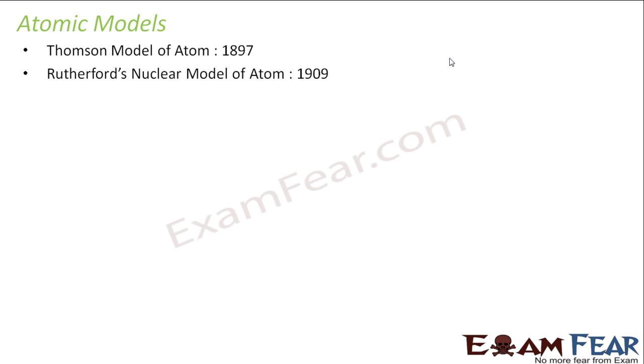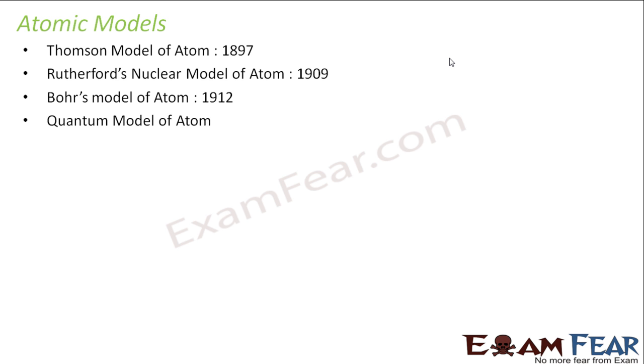After Dalton's atomic theory came up other atomic theories. The first being the Thomson model of atom, around 1897. Thereafter came Rutherford's nuclear model of atom around 1909, followed by Bohr's model of atom in 1912, and then the quantum model of atom. These are the four atomic models we will discuss in this lesson. The quantum model of atom is the one presently accepted and considered to be the real model.